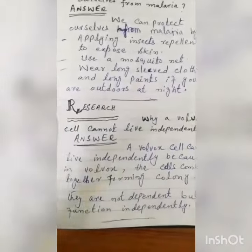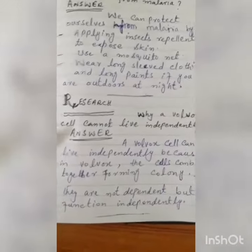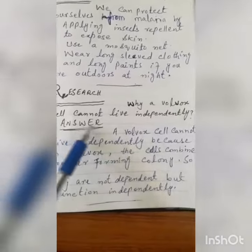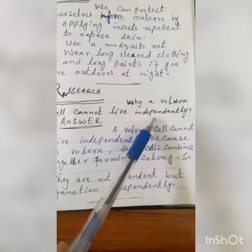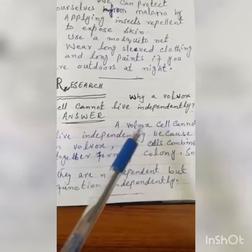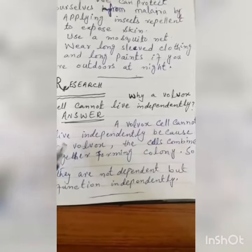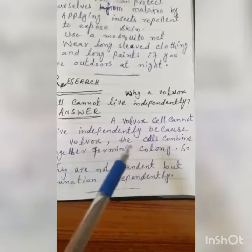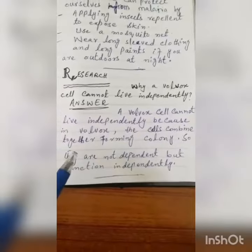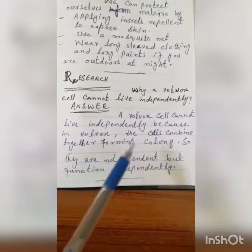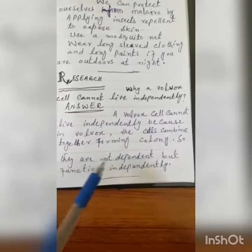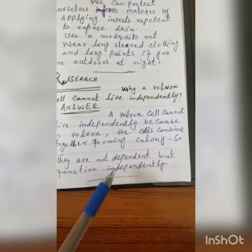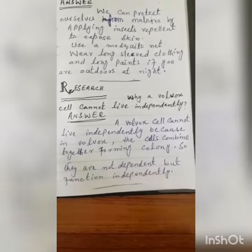Research Question No. 5: Why can a Volvox cell not live independently? A Volvox cell cannot live independently because in Volvox, the cells combine together forming a colony. They are not independent but function together.